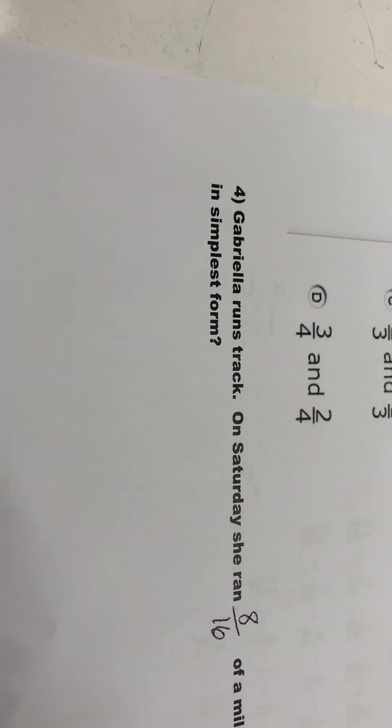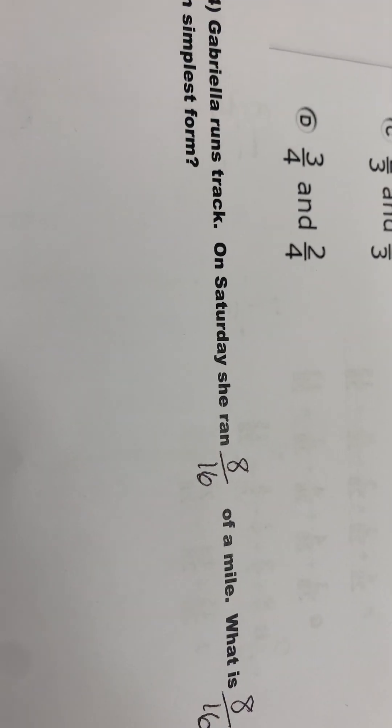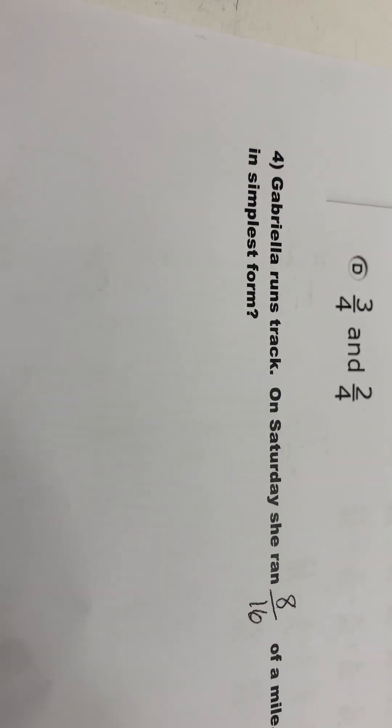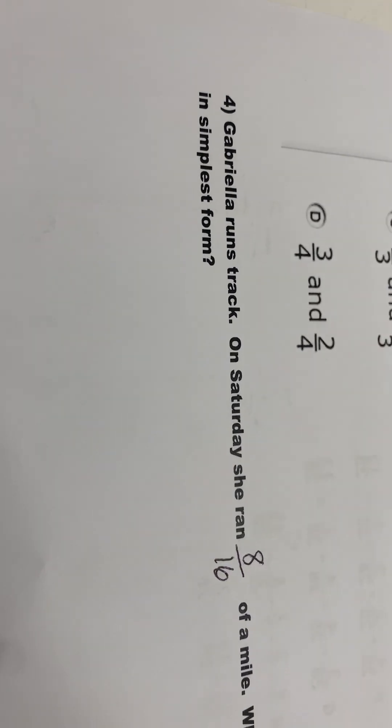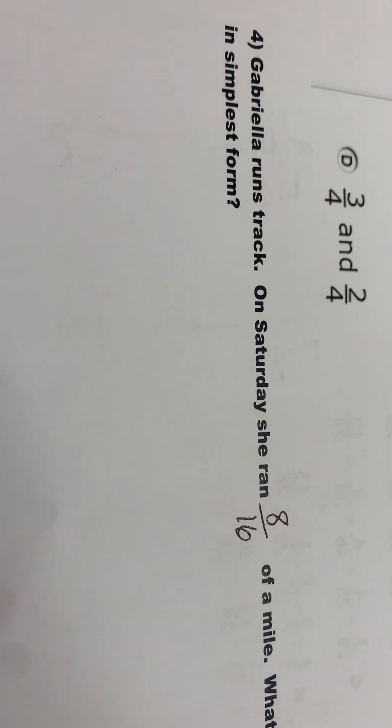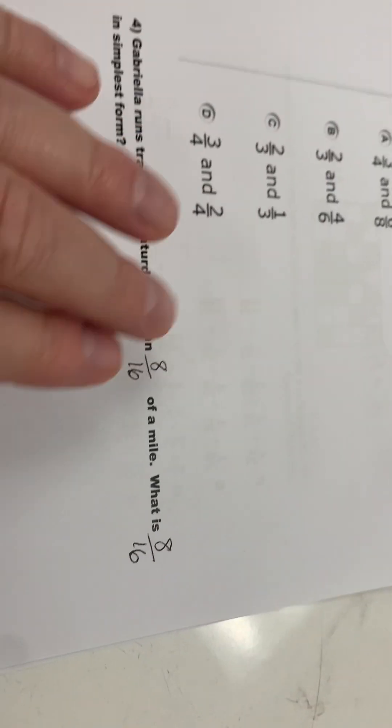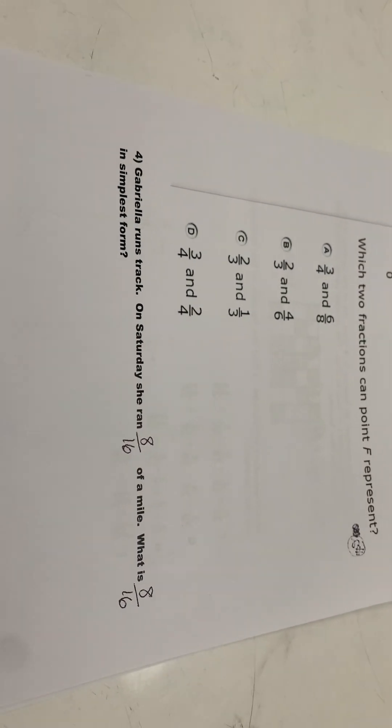I think we missed number four — sorry, let's go back to number four. Gabriela runs track. On Saturday, she ran 8 sixteenths of a mile. What is 8 sixteenths in simplest form? Show your work down there and circle your answer.